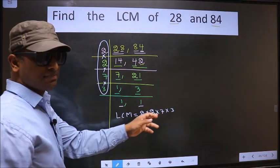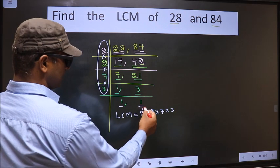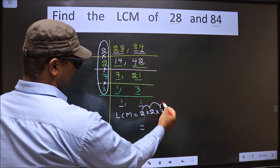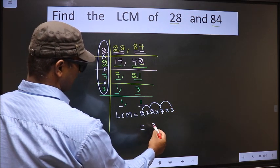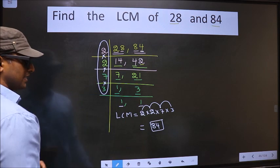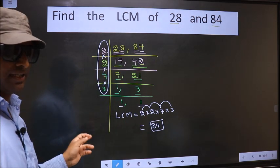Now let us multiply these numbers. That is 2 into 2, 4 into 7, 28 into 3, 84. So 84 is our LCM. Am I clear?